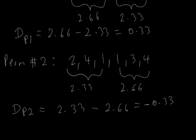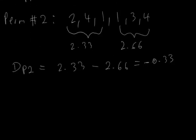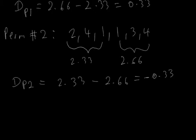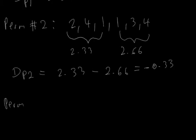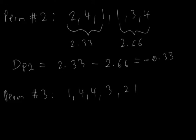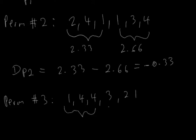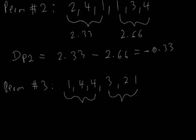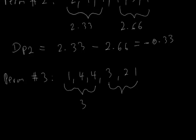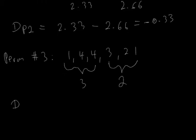For permutation number 3, let's say we get: 1, 4, 4, 3, 2, 1. We perform the same procedure: the mean of the first 3 is 3, the mean of the second 3 is 2, and so the difference for permutation 3, d(p3), equals 3 minus 2, which is 1.